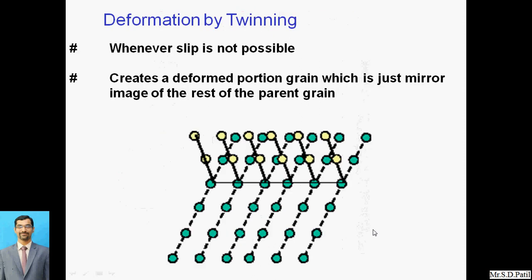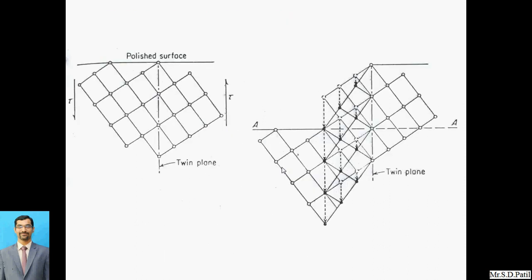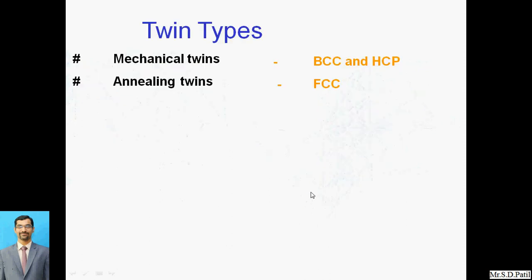When slip is not possible, whatever deformation occurs creates a deformed portion of the grain which is just a mirror image of the rest of the parent grain. This effect is called twinning, which we saw in the last lecture. The twin plane is shown here — on a polished surface we can see reflections. This particular plane is called the twin plane.